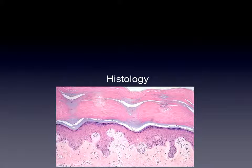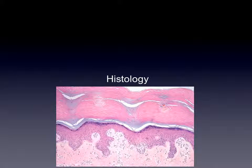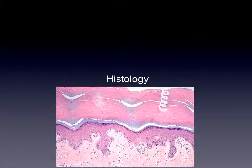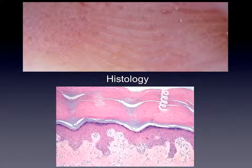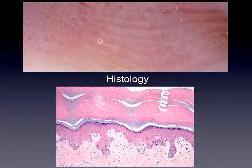This is the histology of an acral skin. We can see the ridges and the furrow in between. This structure, like a corkscrew, is the duct of an eccrine sweat gland. The opening is right on the top of the ridges. These structures correspond to the white dots you see here in the dermoscopy on the top of the ridges.